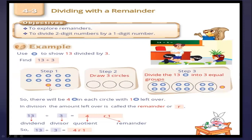Step 1: count out 13 counters. Step 2: draw 3 circles and divide the 13 counters into 3 equal groups. There will be 4 counters in each circle with 1 counter left over.